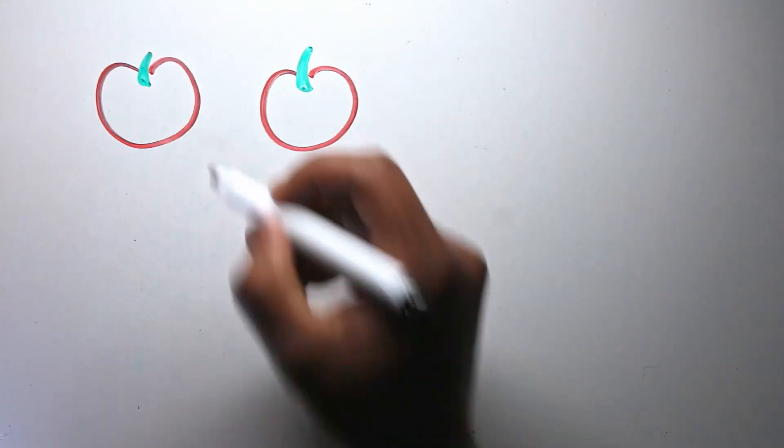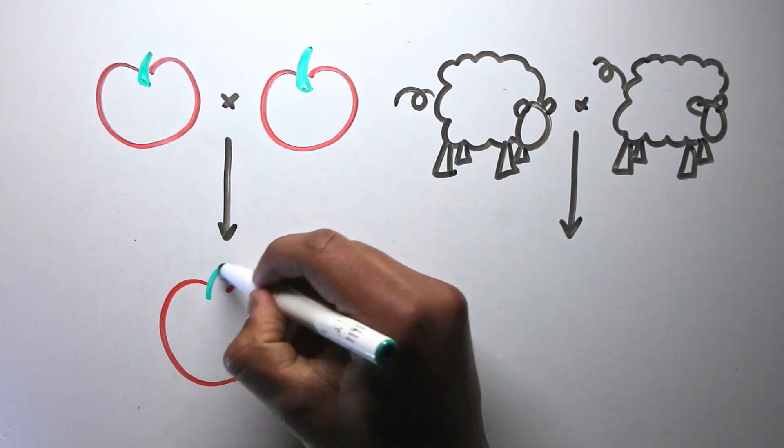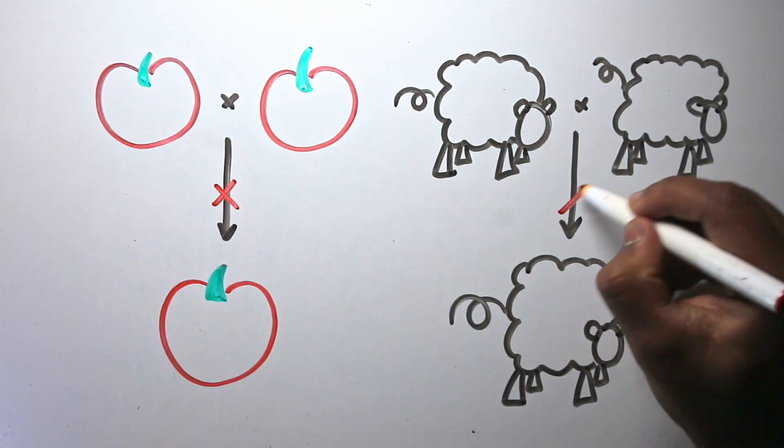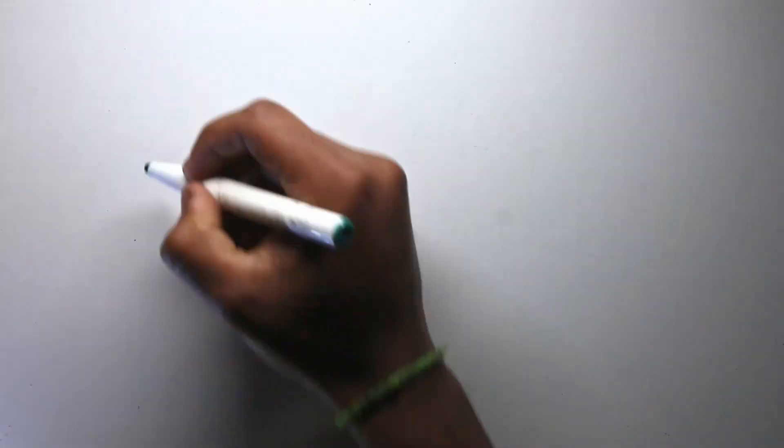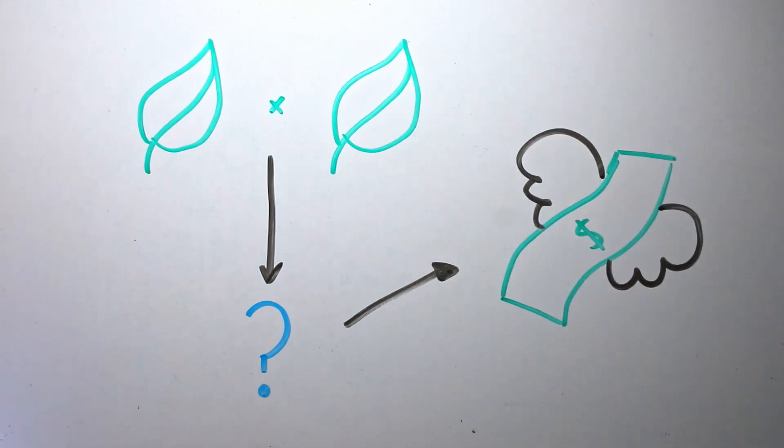One thing that people knew was that crossing plants that gave big tomatoes, or sheep with lots of wool, generally gave offspring that inherited those characteristics. But this didn't always work very well. If we knew how this was possible, or could learn something about breeding, there was a clear economic advantage.